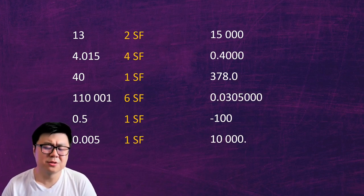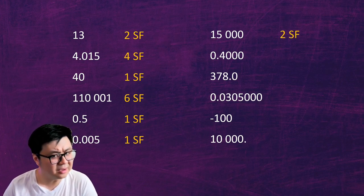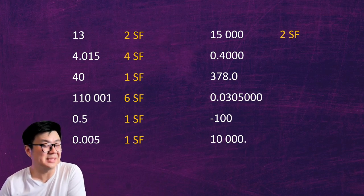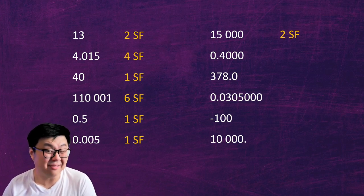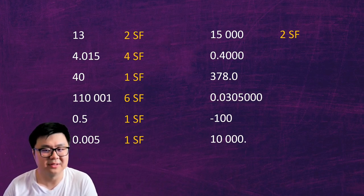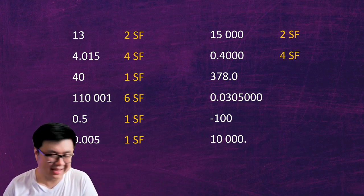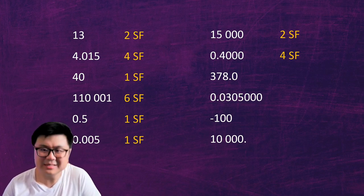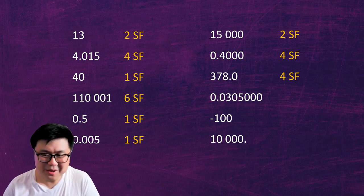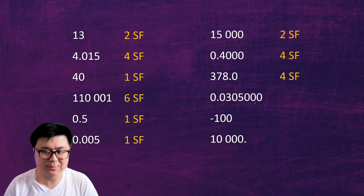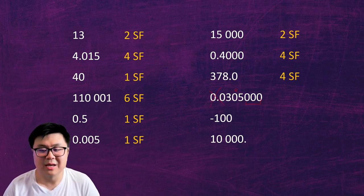Continuing with 15,000 — those three zeros at the end had to be there to give you 15,000, so we don't count them: only two sig figs, which are the one and the five. For 0.04000 — those three zeros after the four didn't have to be there, because it's 0.04 either way. Since they didn't have to be there but still are, they're there to prove confidence: four sig figs. For 378.0 — the point zero seems redundant but it's there for a reason, so we count it: four sig figs. For 0.030500 — the zeros between the three and five count per rule two, the trailing zeros count per rule three, and the leading zeros don't count. That gives us six sig figs. A negative sign doesn't make a difference at all, so negative 100 is still one sig fig, which is just the one.